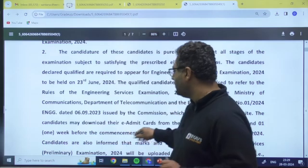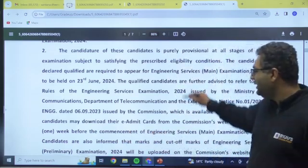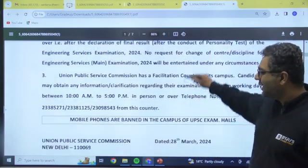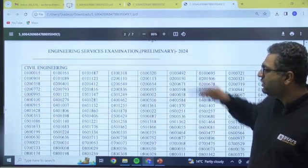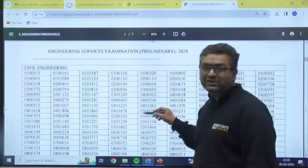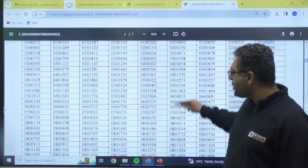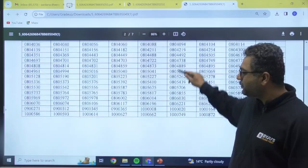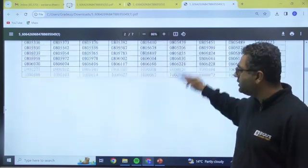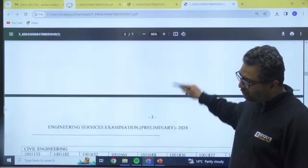They are also showing the list. For civil engineering, almost 783 students are shortlisted for the second stage, that is main paper. After that, interview will also be there. So 783 students from the side of civil.